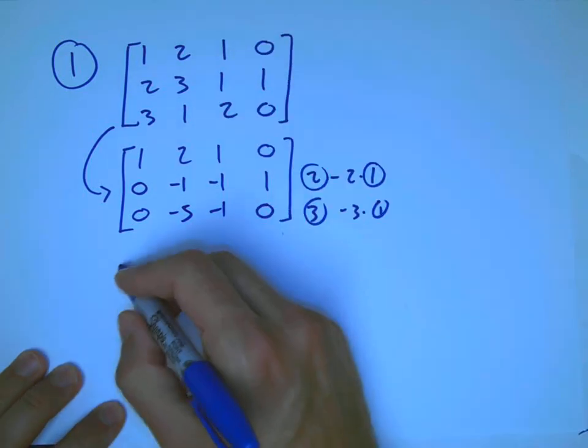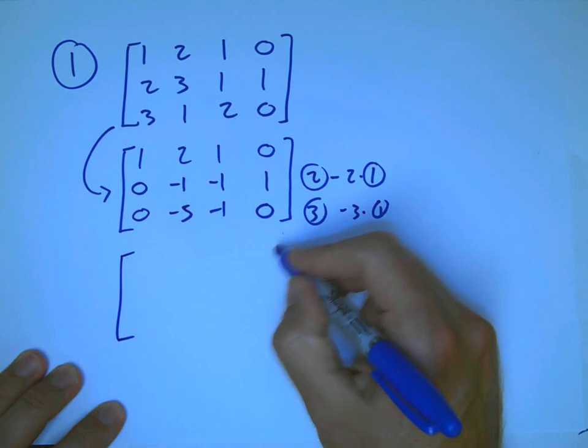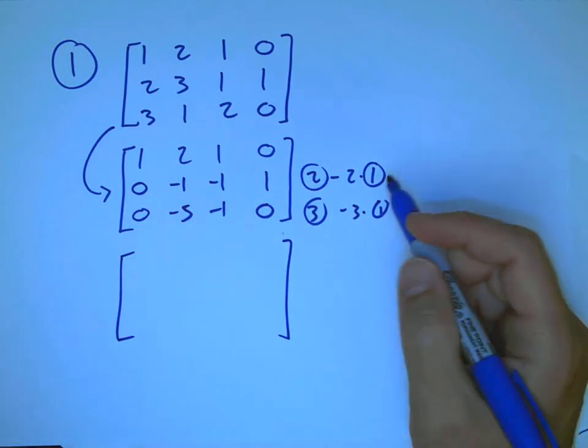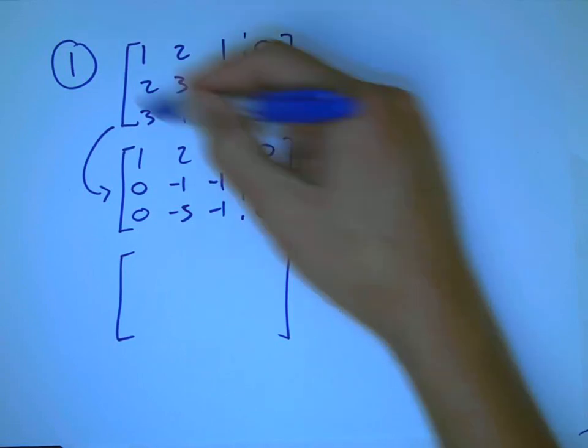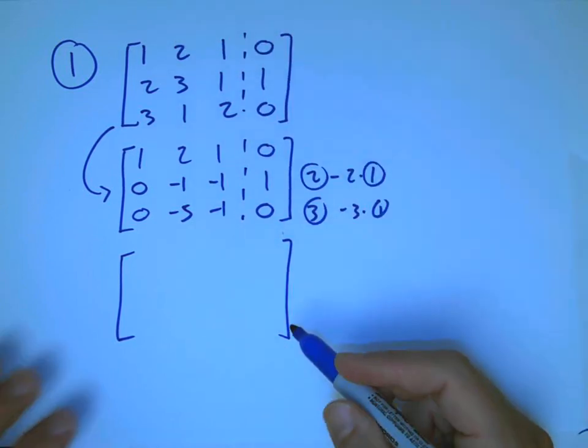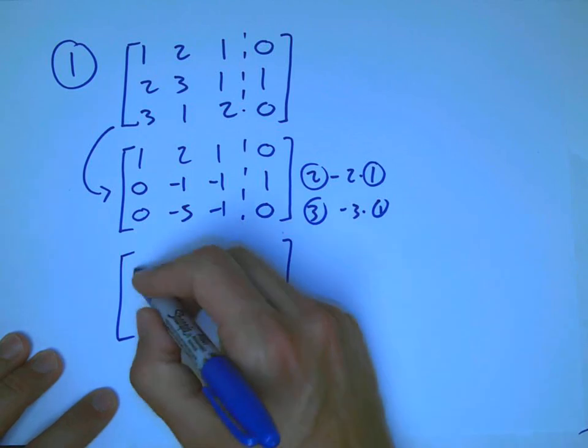By the way, I picked these pretty much at random, just small random numbers. And we're going to see what happens when you have a fairly random 3 by 3 system. Remember, we can put dotted lines in here. This is the coefficient matrix. These are the right-hand side.